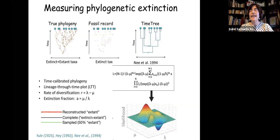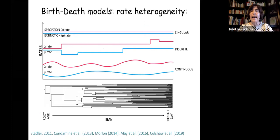We use likelihood-based methods — maximum likelihood or Bayesian inference — to estimate the rate of speciation and extinction from lineage-through-time plots. Many different models have been developed in the last ten years. They try to relax the rate of diversification and extinction: for example, models where speciation/extinction is constant, where they vary at discrete time points, or where they vary continuously depending on an environmental variable.